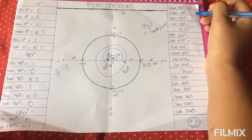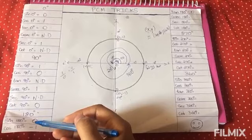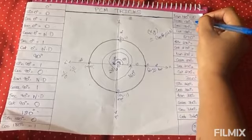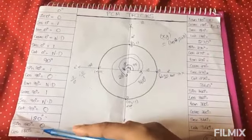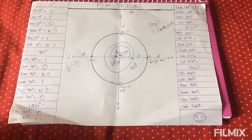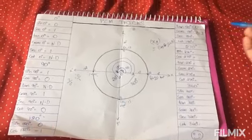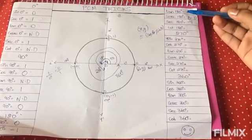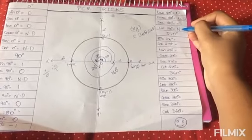Cosecant 180 degree is the reciprocal of sin 180 degree. Reciprocal of 0 is not defined. Therefore, cosecant 180 is not defined. Secant 180 degree is the reciprocal of cos 180 degree. Reciprocal of minus 1 is again minus 1 itself. Cot 180 degree is the reciprocal of tan 180. Therefore, reciprocal of 0 is again not defined.